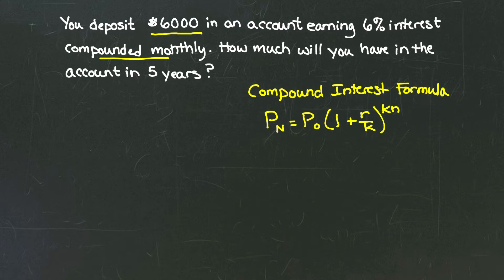In this formula, P sub n is our future amount, that's our future principal. P sub 0 is our initial amount, or our initial deposit. R is our interest rate, and k is the number of compounds per year.